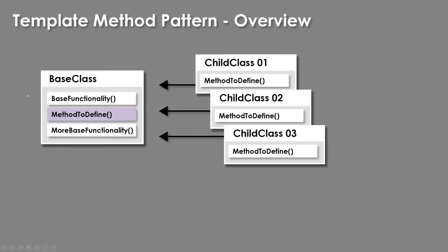So anytime you have a series of things you always want to do at a base, but you want to change one of the steps that happens, the template method pattern is a really good solution. For the template method pattern, you're going to typically have a base class that will call some other functionality — an initial setup method, some collider detection, and so forth — but one of the steps you don't really want to define in the base.